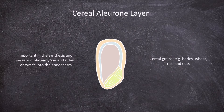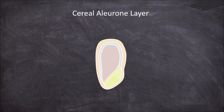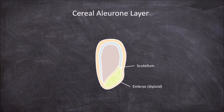The embryo of a cereal grain such as barley, wheat, rice and oats consists of three regions. The first region is the plant embryo, which is diploid. This region is made up of the plant embryo itself as well as the scutellum, which functions as an absorptive organ for the plant embryo.